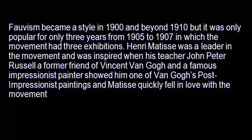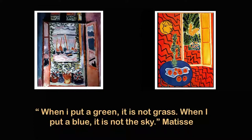It was only popular as a movement for three to four years, during which the movement had three exhibitions. Matisse was the leader and was inspired when his teacher Russell — a former friend of Van Gogh and a famous painter — showed him one of Van Gogh's paintings, and Matisse quickly fell in love with that direction. Matisse could say, to quote him: 'When I put a green, it is not grass. When I put a blue, it is not the sky.' Not only is he altering the identical role of colour, he is providing new meaning, new existence, and new significance to colour in the context of a painting.